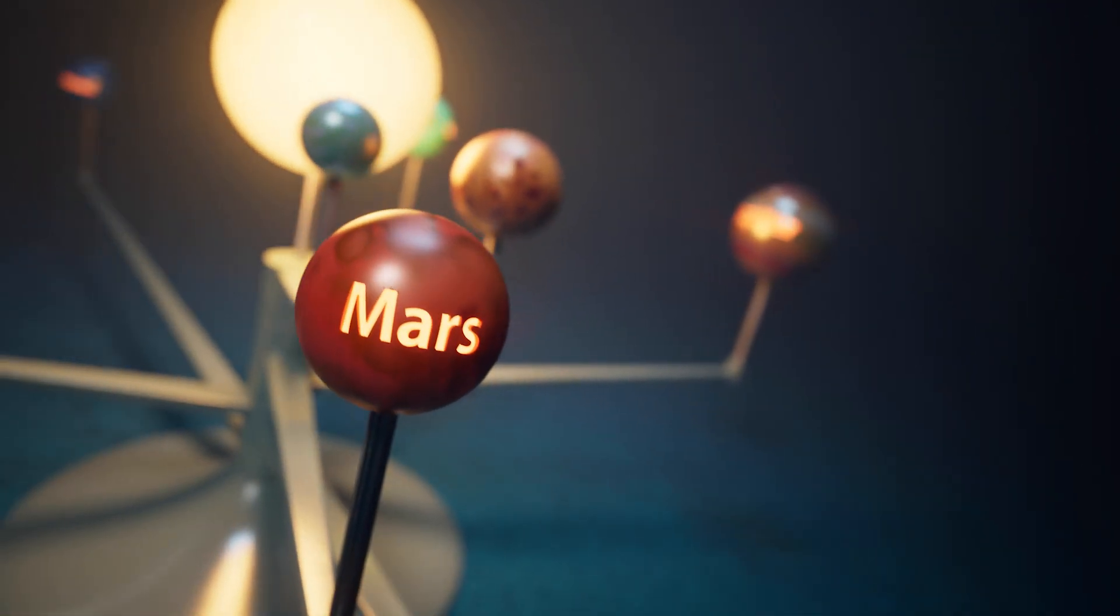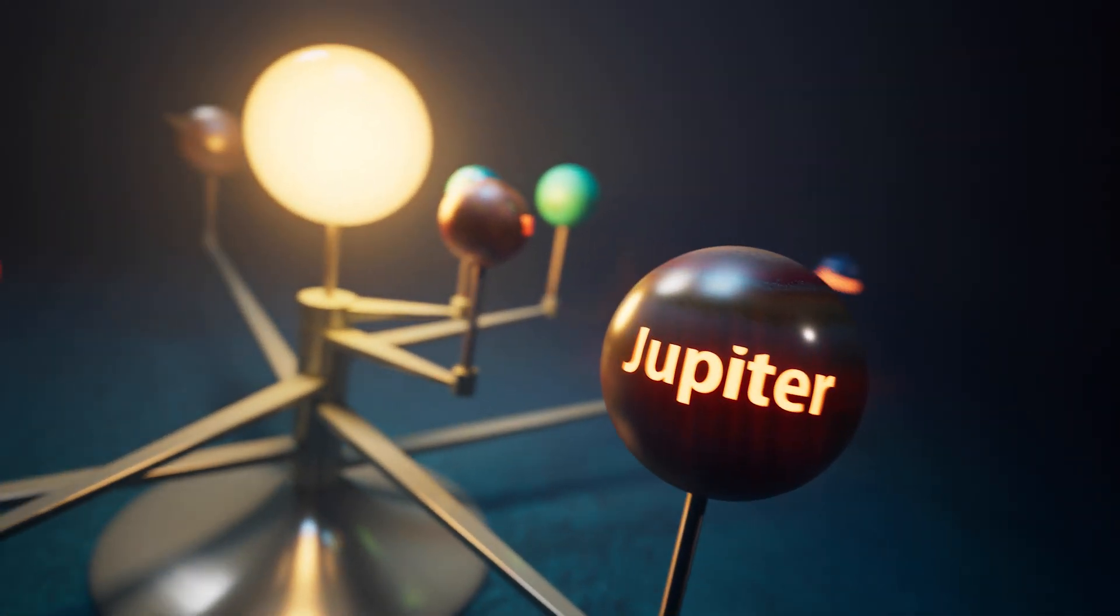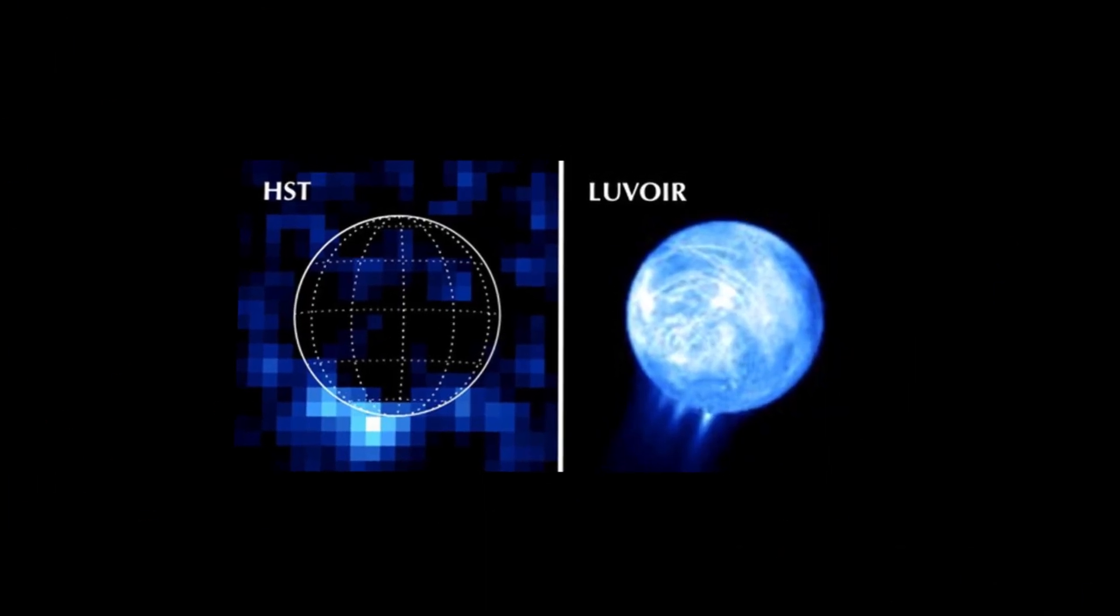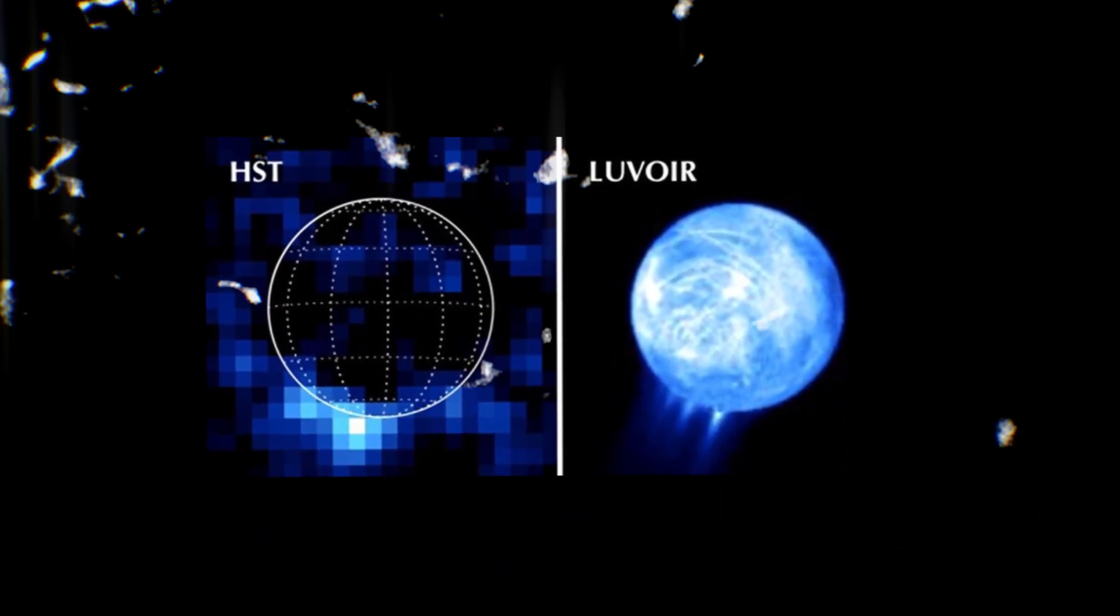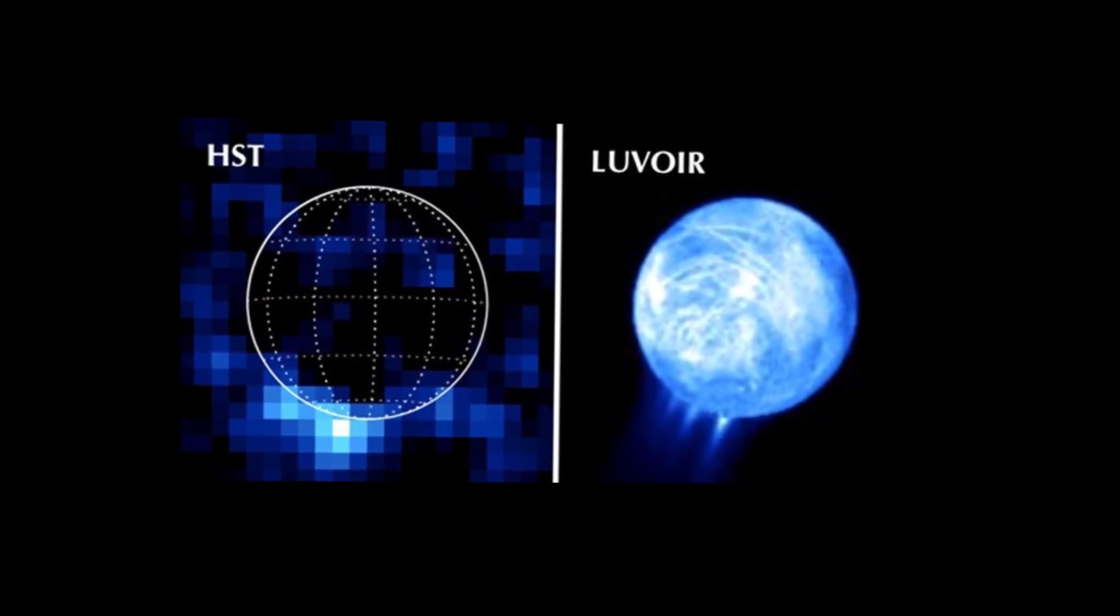LeVoir would be able to observe objects within the solar system better than anything else. For example, here's a view of Enceladus from Hubble, compared to the view from LeVoir.